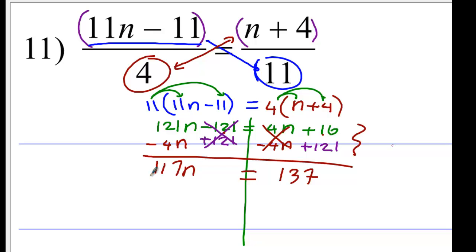The last step is divided by 117. So, n equals 1.17.